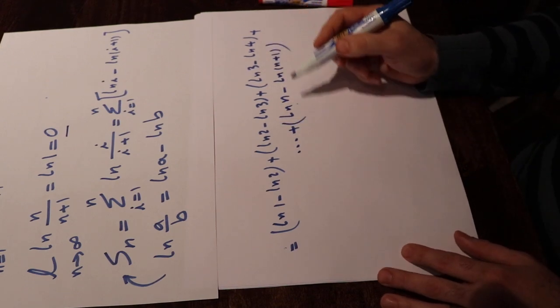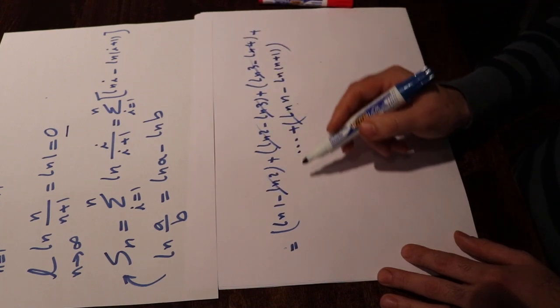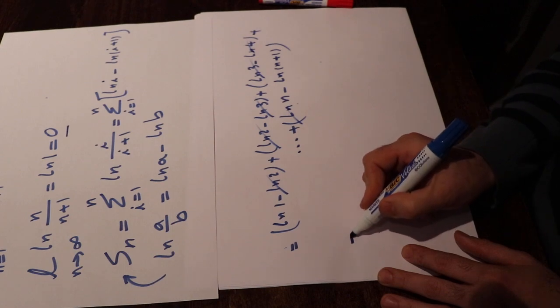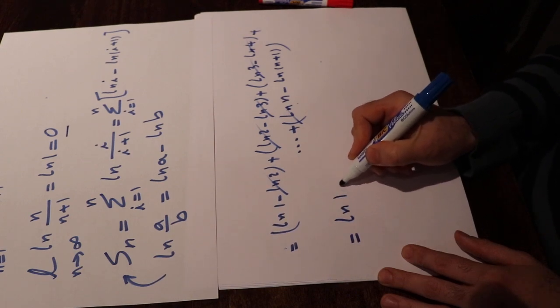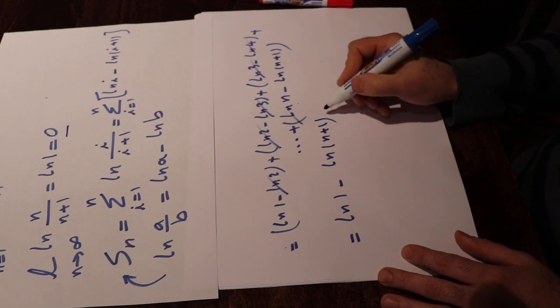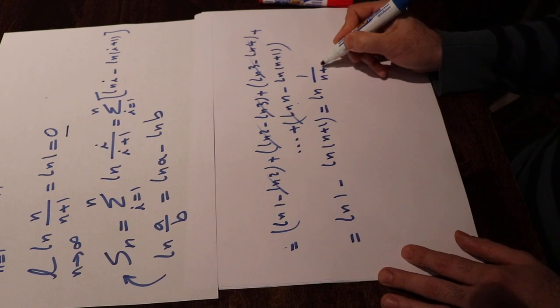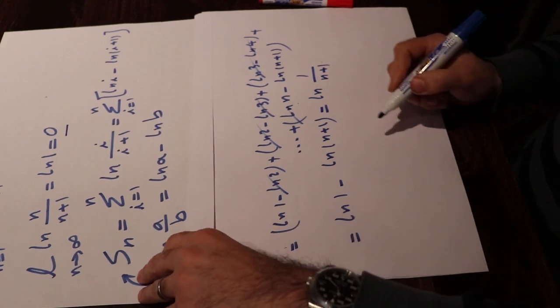When you look at this series, this summation, you see all the terms will cancel out except the first term and last term. So that will be equal to ln 1 minus ln n plus 1, which will be equal to ln 1 divided by n plus 1, using this rule that ln a minus ln b is equal to ln a divided by b.